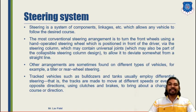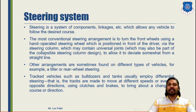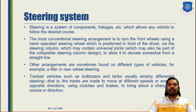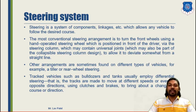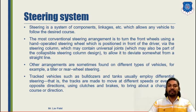The steering system is a system that has many components and linkages which allow any vehicle to follow a desired course or path. It enables the vehicle to be moved from one direction to another — left to right. The most conventional steering arrangement is to turn the front wheels using a hand-operated steering wheel, which is positioned in front of the driver via a steering column and universal joints, which may also be part of a collapsible steering design to allow some deviation from a straight line.